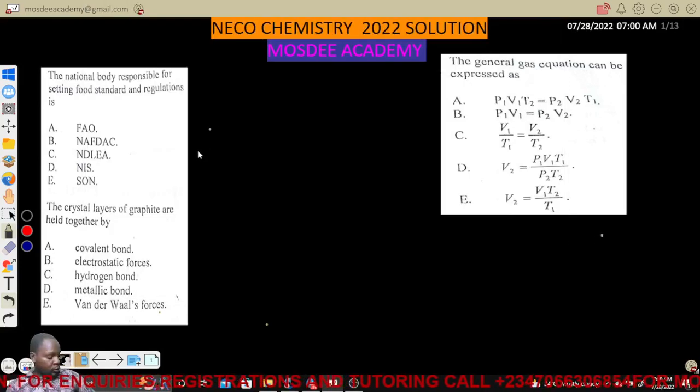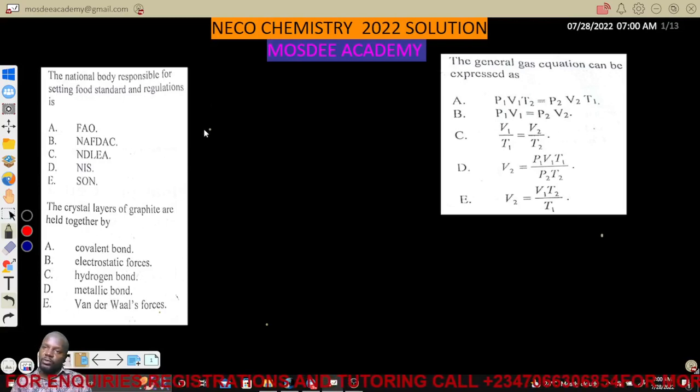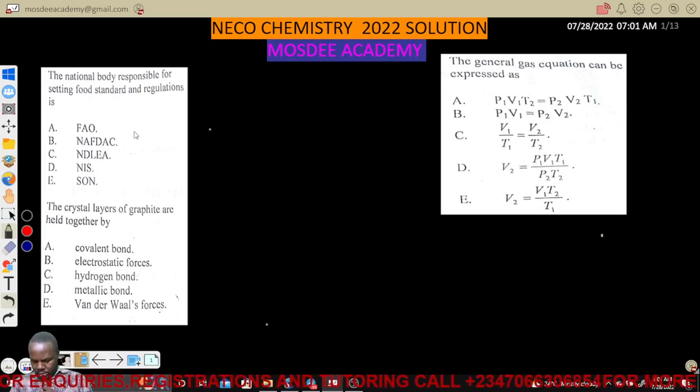This is NECO Chemistry 2022 speed solution. I have 45 minutes for 60 questions - not a concept video class, just a solution class. First question: The national body responsible for setting food standards and regulation is NAFDAC - National Agency for Food Drug Administration and Control.